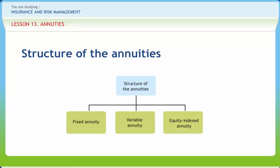Next is the equity indexed annuity. In this type of annuity, the money is invested in a fixed account and the person may earn additional interest based on the performance of a particular stock index such as the Standard and Poor's 500 Index, the Dow Jones Industrial Average, the Nasdaq Composite Index, or the Russell's 2000 Index.